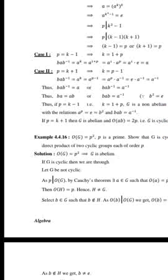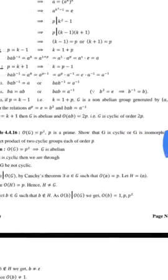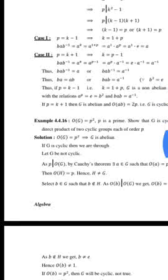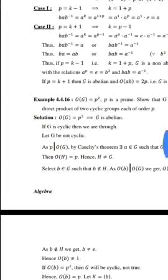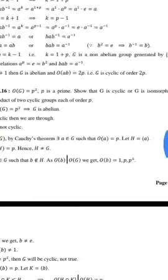Thus, either BAB⁻¹ equals A (and BA equals AB), or BAB⁻¹ equals A⁻¹ (equivalently BAB equals A⁻¹), and B² equals E. If k equals P minus 1, G is a non-Abelian group generated by A and B with relations A^P equals E equals B², and BAB equals A⁻¹. If k equals 1, then G is Abelian and the order of AB equals 2P, that is, G is cyclic of order 2P.